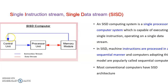This blue arrow indicates the instruction stream since the instruction is coming from memory to the control unit. The control unit decodes the meaning of the instruction and the decoded version is given to the processing unit for further processing. While executing the instruction it may take data from memory or write the result to memory. This red arrow indicates the data stream and is bi-directional.